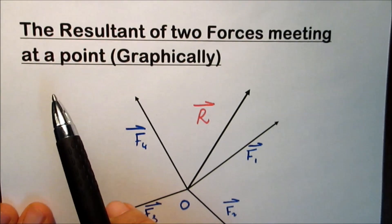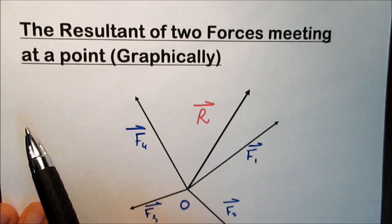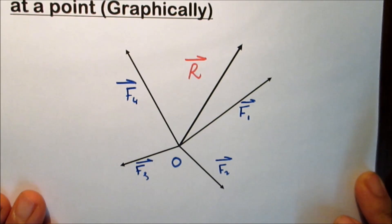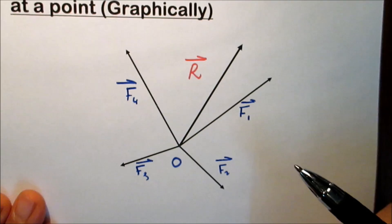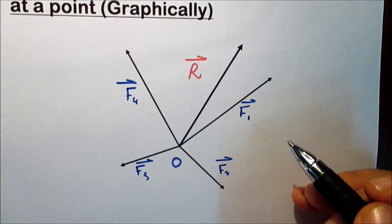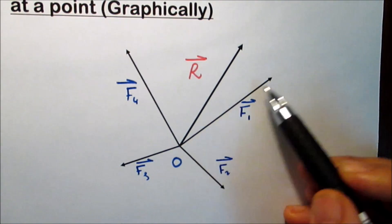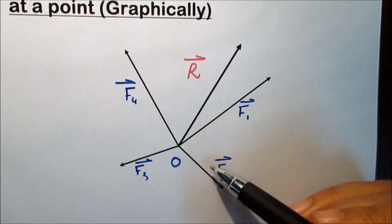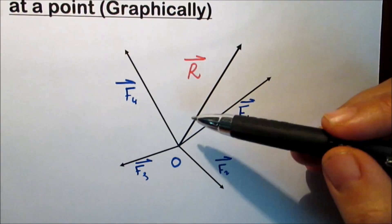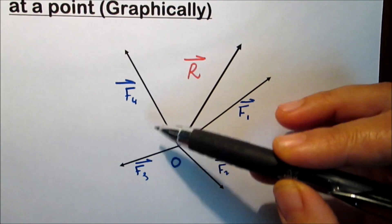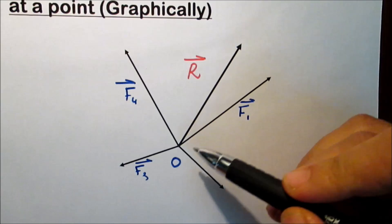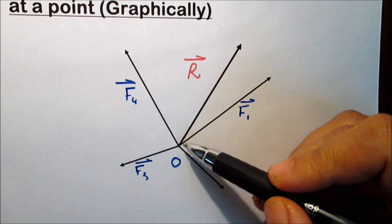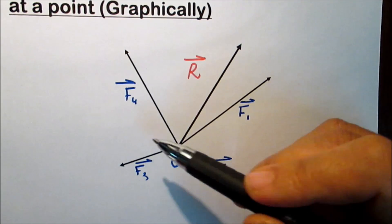In this lesson, we're going to find the resultant of two forces meeting at a point graphically. The resultant of two or more forces is a single force that has the same effect as the other forces. For example, F1, F2, F3, and F4 are four forces acting on an object at point O. R is the resultant of the four forces, meaning R is a force equivalent to the four forces and has the same effect as them.